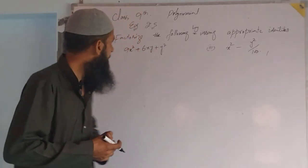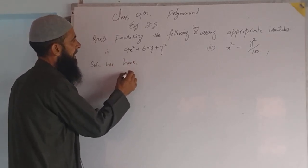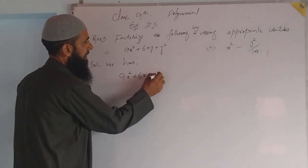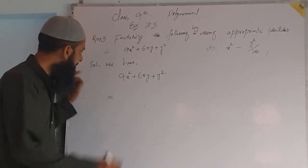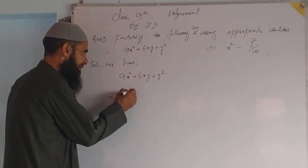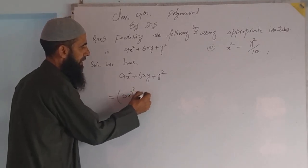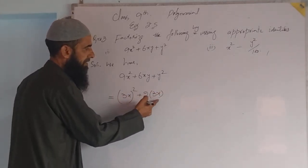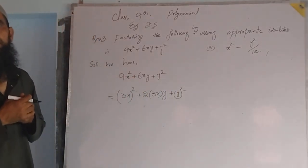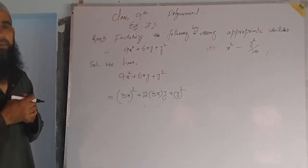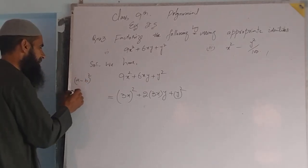The first part of this question is: we have 9x squared plus 6xy plus y squared. This can be written as 3x whole square, since 3 times 3 gives 9x squared, plus 2 into 3x into y, since 2 times 3 gives 6x, plus y squared.